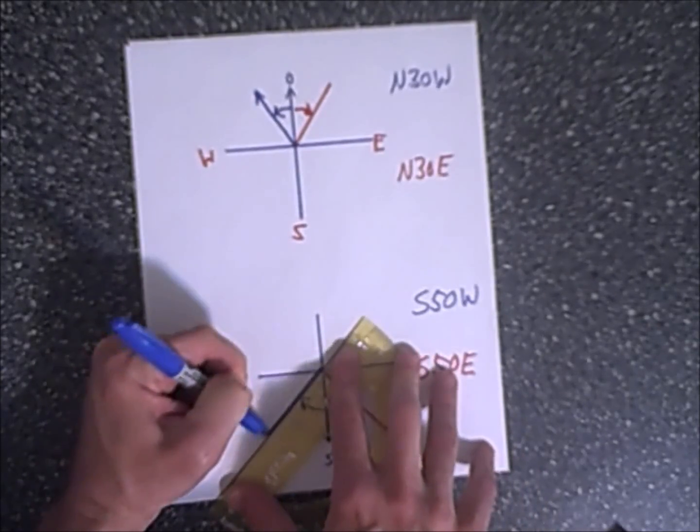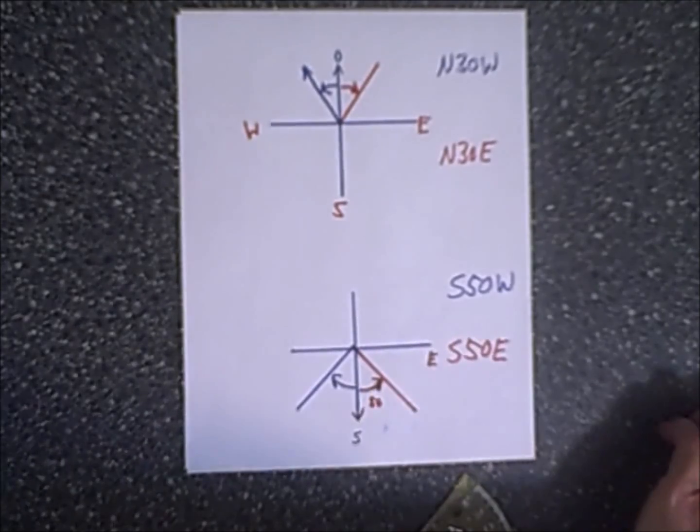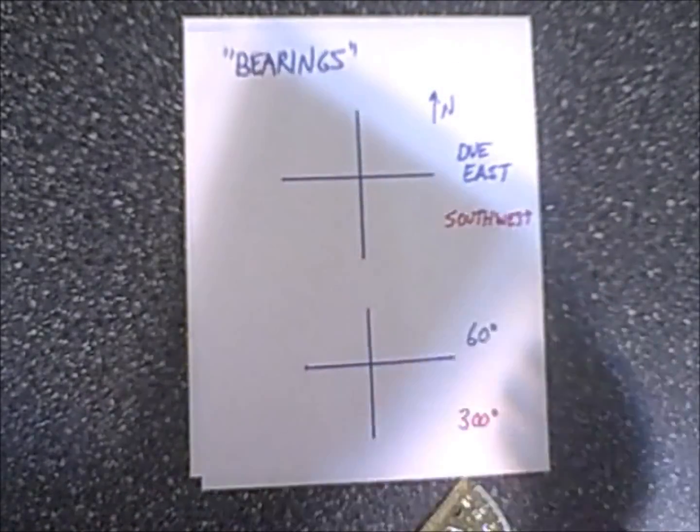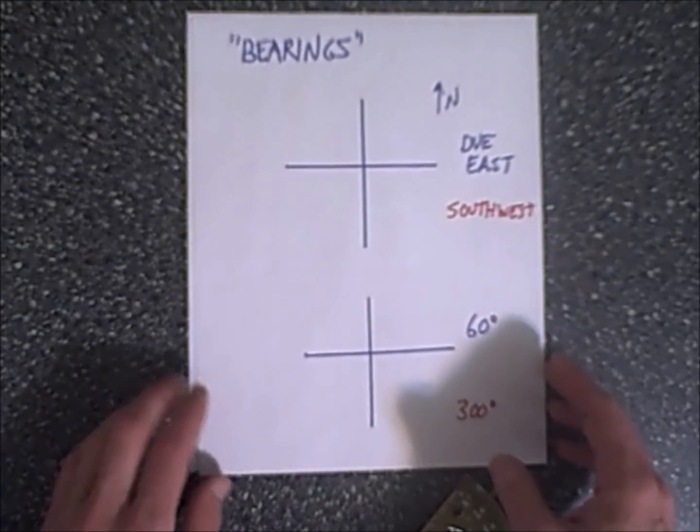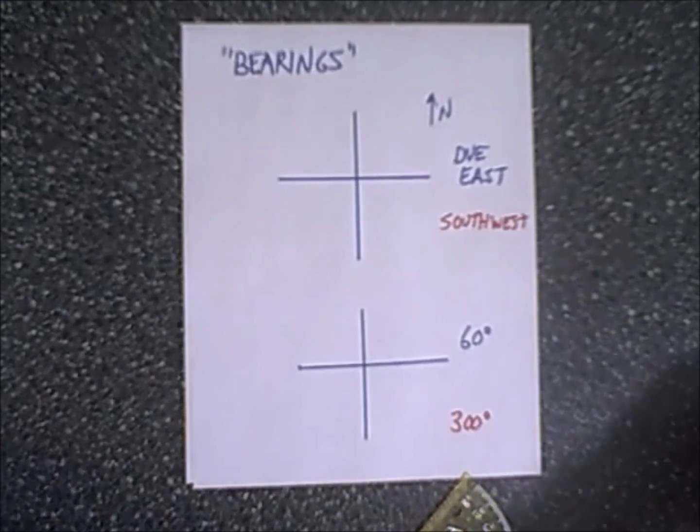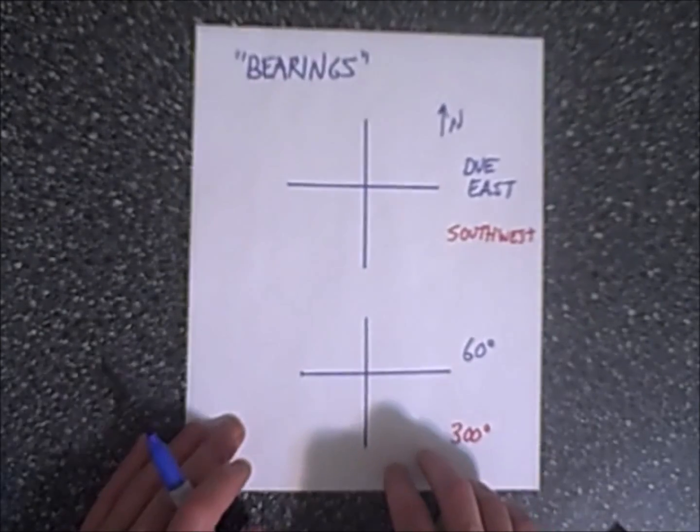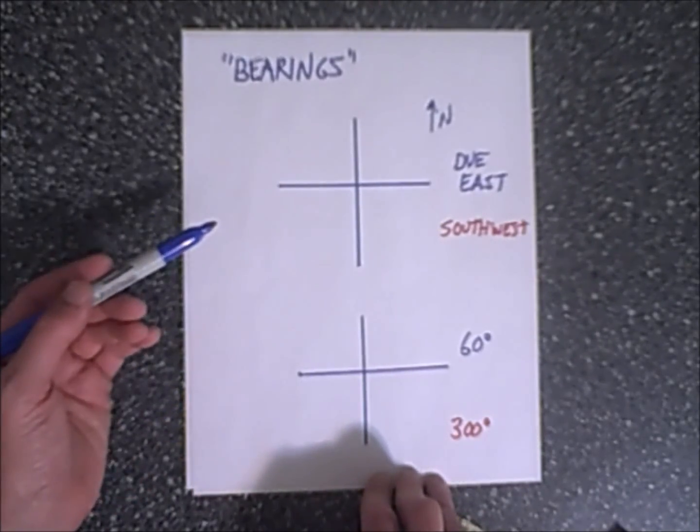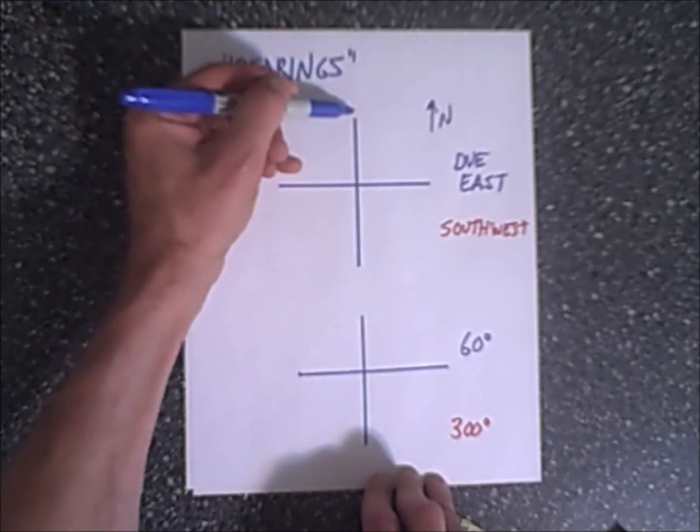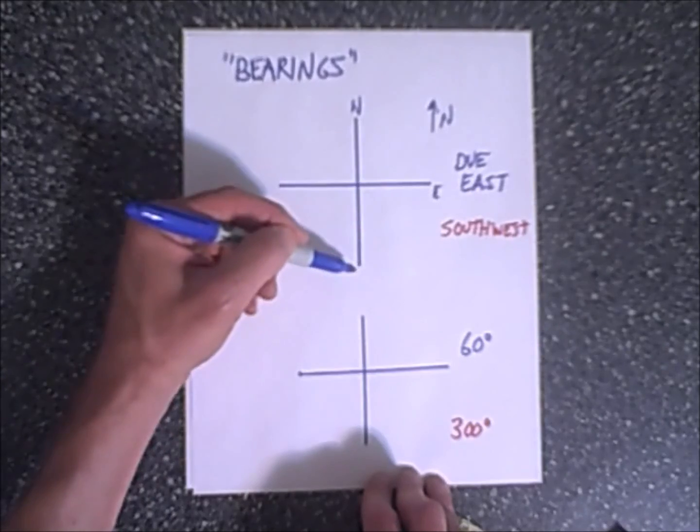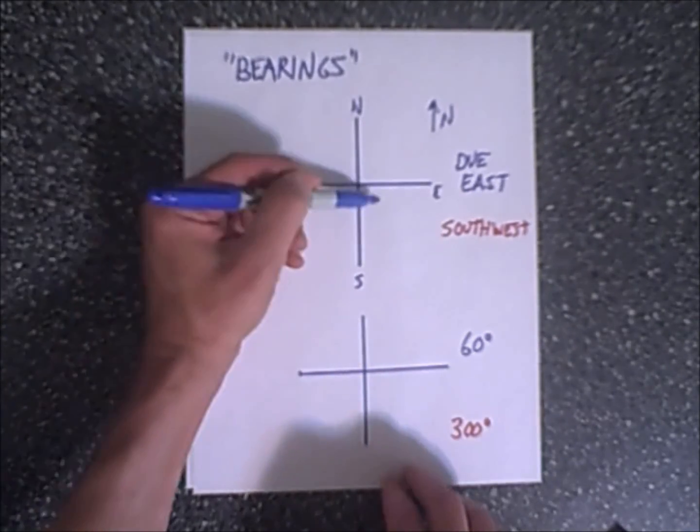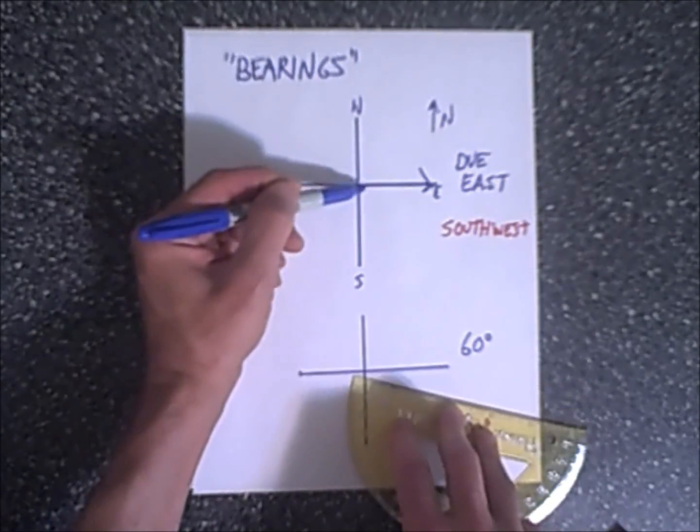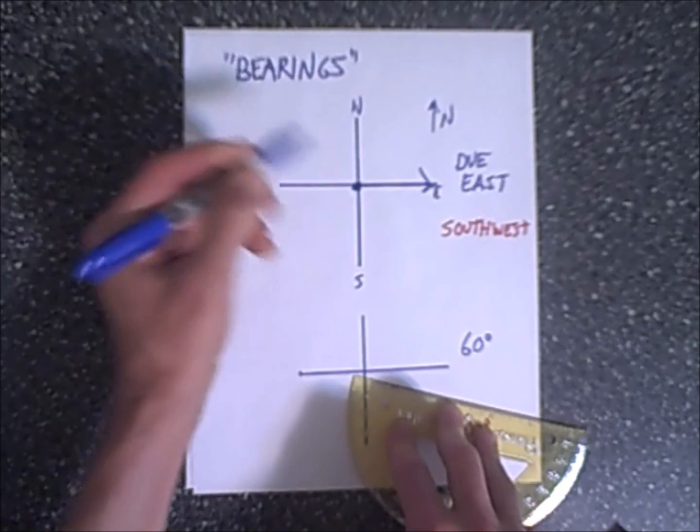And lastly we would have south 50 degrees west, so again we start south and then we move 50 degrees west and we have our angle such as that. Another way of expressing direction and movement and angles in navigation are the terms bearings, and this can be a little bit confusing, but basically it's the same sense as the previous page except you're always starting at due north. So when somebody says a bearing of due east, that's pretty obvious. You have north, east, south, west, so due east of course is just straight down the horizontal axis.